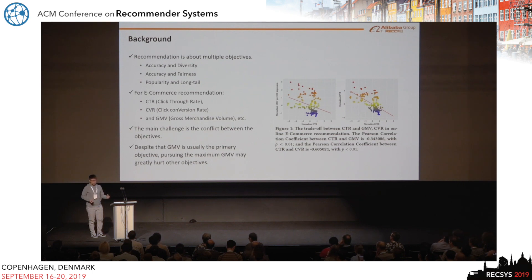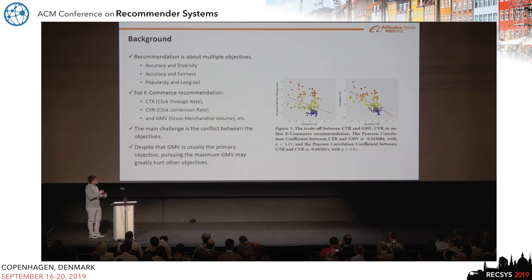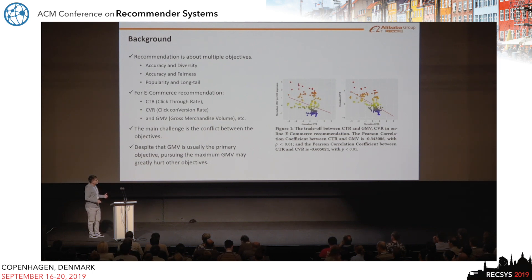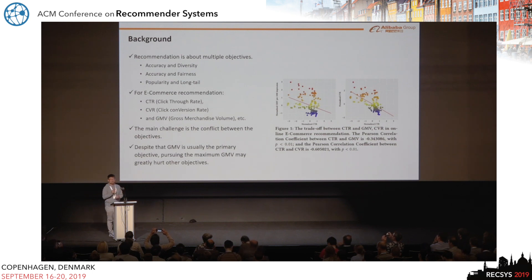In the case of e-commerce recommendation, there are several important metrics that we need to bear in mind, such as CTR and GMV — GMV means gross merchandise volume, which indicates how much money the platform is earning. The main challenge of multiple objective optimization in recommendation is the potential conflict between the objectives.